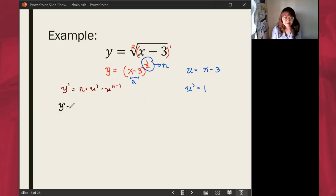Let's substitute this to the formula. So we have y prime is equal to n, which is one-half, times u prime, which is 1, times u, x minus 3...